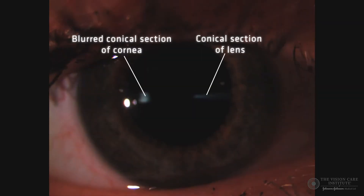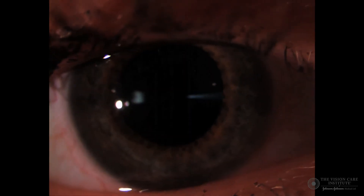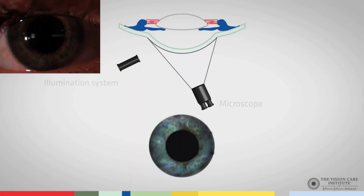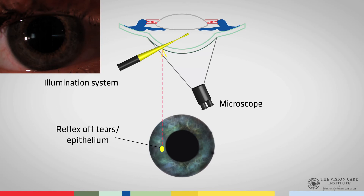The space between these two will be the optical space generated by clear aqueous. The light hits the cornea and forms the reflex off the cornea, then carries on through and strikes the border between the lens and the iris. The space in between should be optically clear, but if we have any inflammatory products, we will see a hazy scatter due to the inflammatory products. This is known as Tyndall's effect.